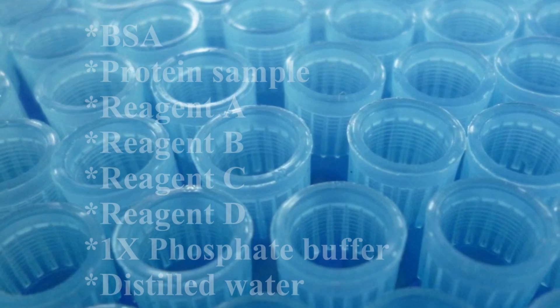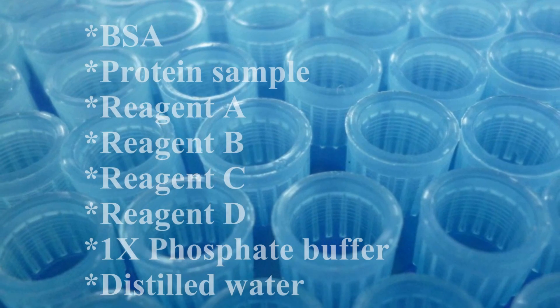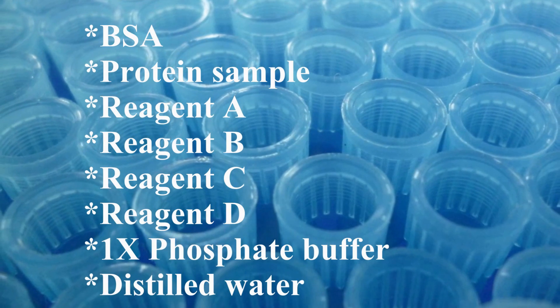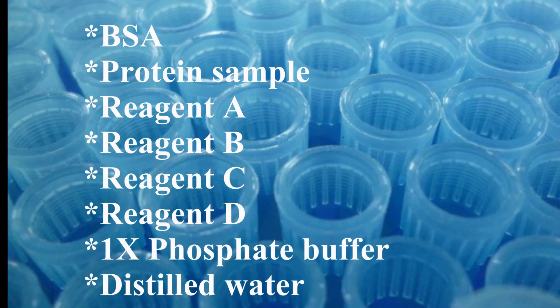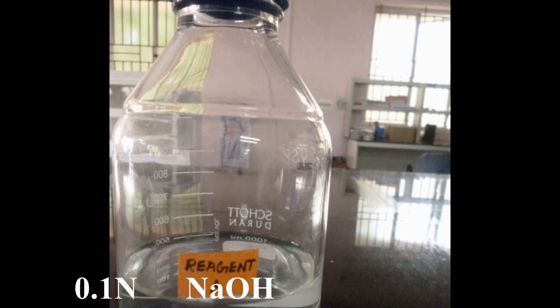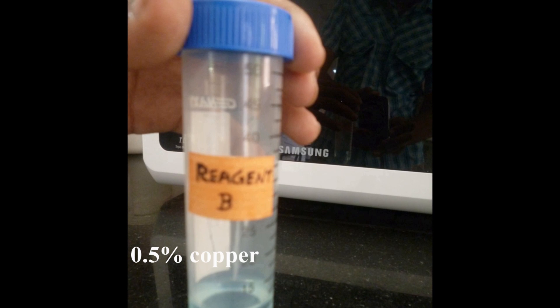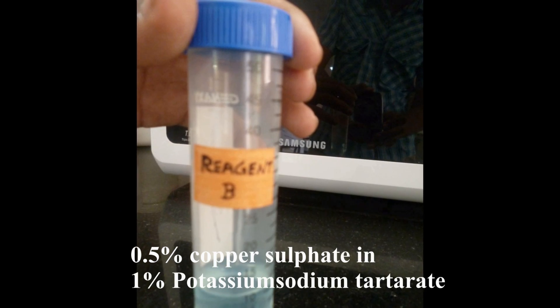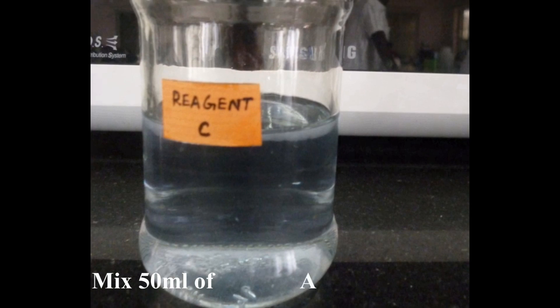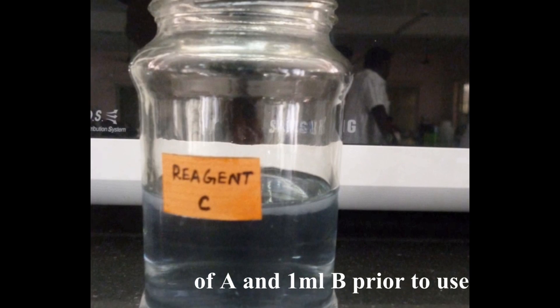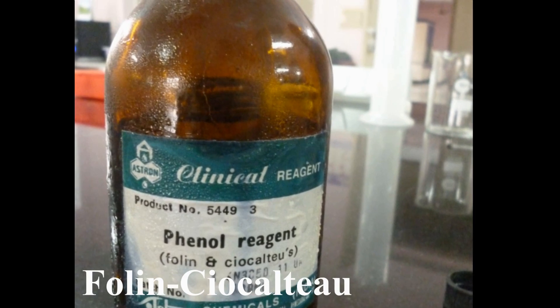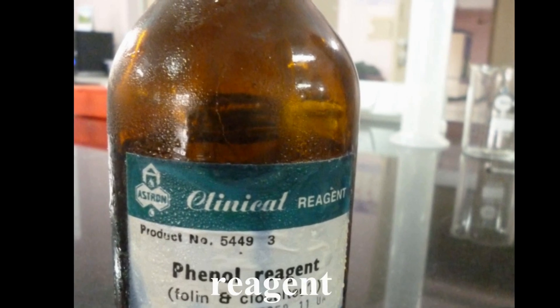The reagents required are BSA, protein sample, reagent A, B, C, D, and 1x phosphate buffer and distilled water. Reagent A contains 2% sodium carbonate in 0.1N sodium hydroxide. Reagent B contains 0.5% copper sulfate in 1% potassium sodium tartrate. Reagent C is an alkaline copper solution made by mixing reagent A and B. Reagent D is the Folin-Ciocalteu reagent.